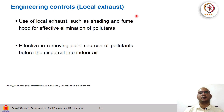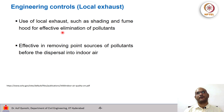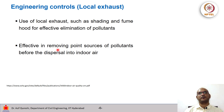Another option is engineering controls, for example through local exhaust. The use of local exhaust controls and fume hoods could be effective compared to the baseline scenario. For example, exhaust can be useful in removing point sources of pollutants before their dispersal into air, such as in a kitchen or just above the kitchen stove.